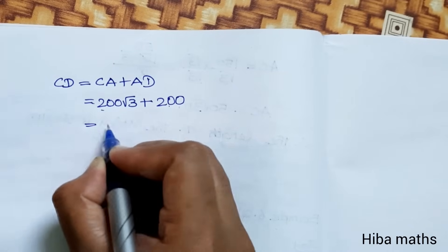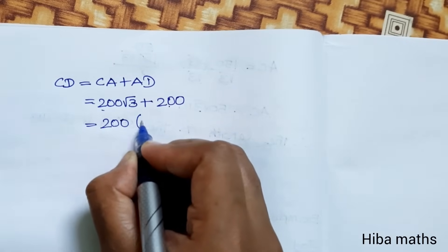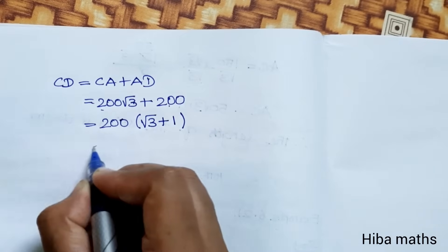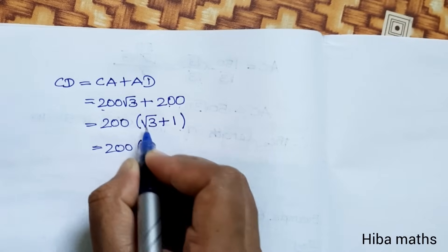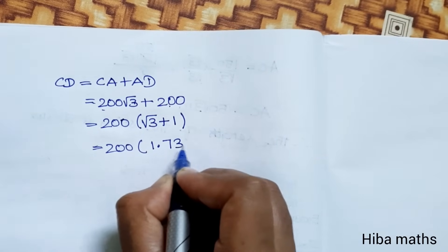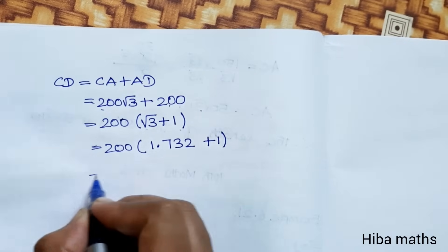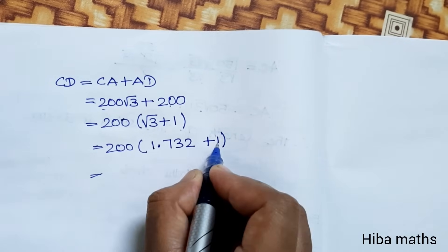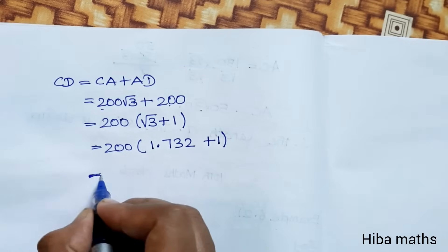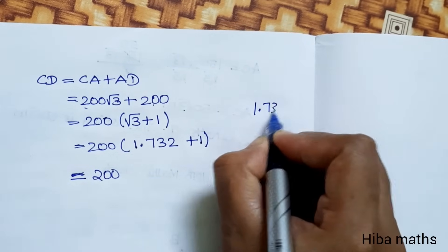So AD is equal to 200. Now the total distance CD is CA plus AD, which equals 200 root 3 plus 200, giving 200 into (root 3 plus 1). Substituting root 3 equals 1.732, we get 200 into 2.732, which equals 546.4.